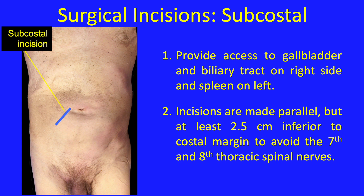The subcostal incisions provide access to the gallbladder — for example, to perform a cholecystectomy — as well as the biliary tree on the right side, or the spleen on the left side. The incisions are made parallel but at least 2.5 cm inferior to the costal margin to avoid the 7th and 8th thoracic spinal nerves. Today, however, 90% of cholecystectomies are performed laparoscopically.